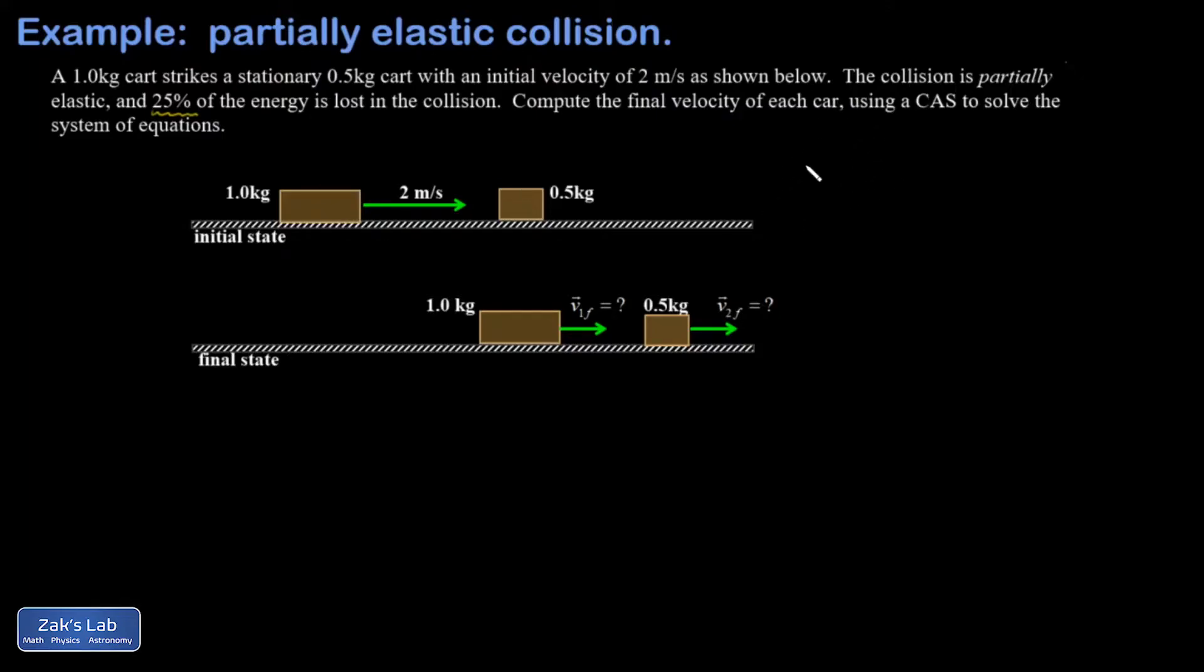Momentum is conserved during this collision. I can write down 1 kilogram times 2 meters per second equals 1 kilogram times V1 final plus 0.5 kilograms V2 final. Multiplying by 2 to clean it up, I get 4 equals 2V1 final plus V2 final. We'll need that for later, so I left it in a box.